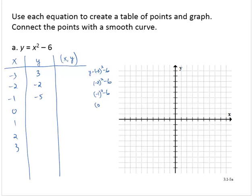And 0 squared minus 6 is negative 6. 1 squared minus 6 is 1 minus 6, which is negative 5. 2 squared minus 6, that's 4 minus 6 is negative 2. And 3 squared minus 6 is 9 minus 6, which is 3.